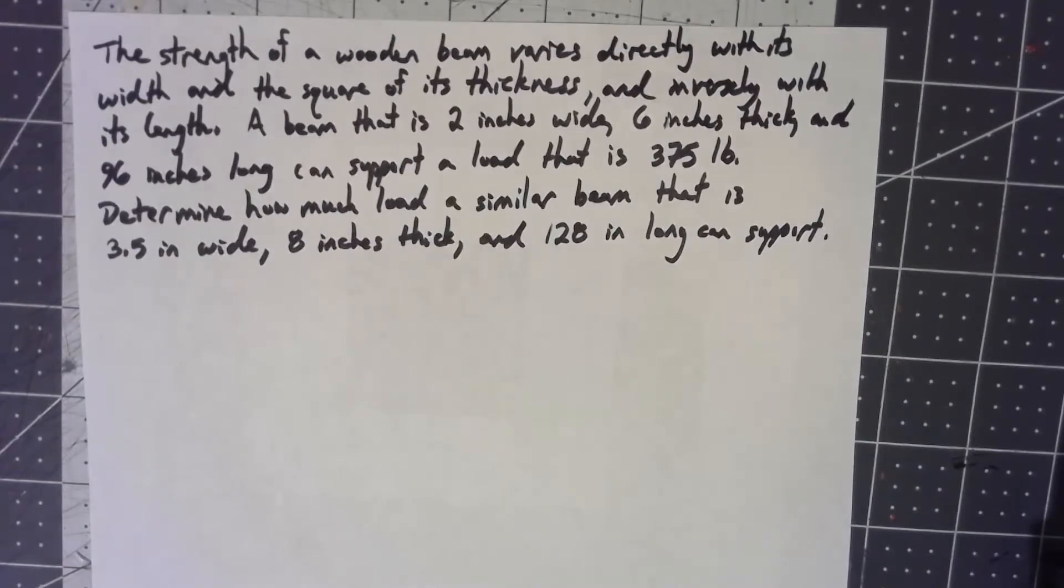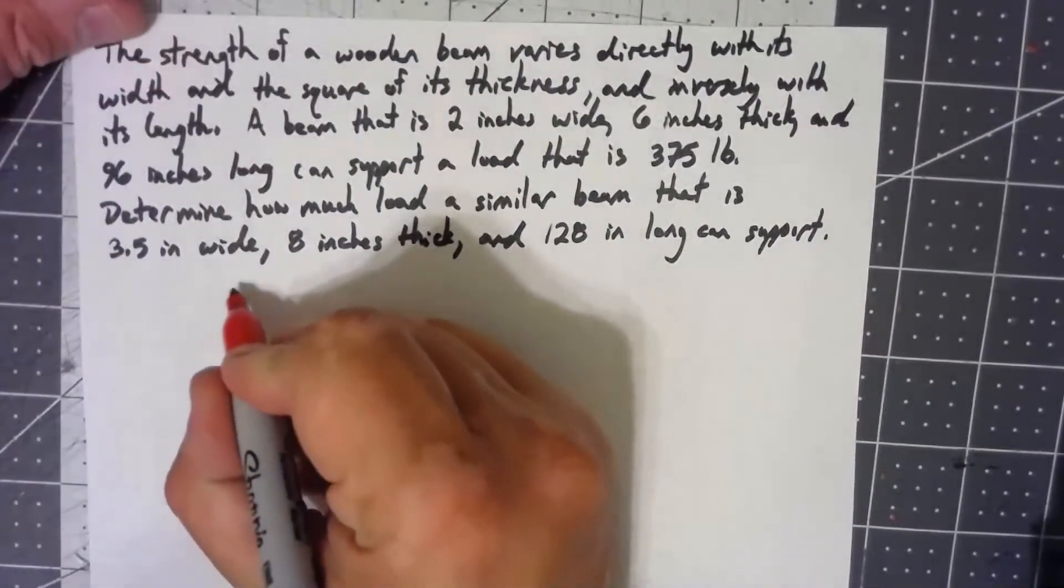So the strength of a wooden beam varies directly with its width and the square of its thickness and inversely with its length. Okay, before I do anything here, let's set up some variables.